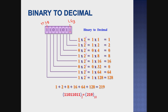So first digit: 1 into 2 power 0 — we know the value of 2 power 0 is 1, and 1 into 1 is 1. Next digit: 1 into 2 power 1, which is equal to 2. For the digit 0: we know the value of 2 power 2 is 4, and 0 into 4 equals 0 — zero into anything is zero. Next digit 1: we know the value of 2 power 3 is 8, so 1 into 8 is 8.